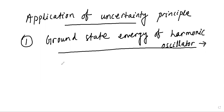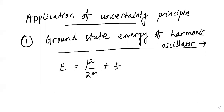We know the total energy of a harmonic oscillator in one dimension, along the x-axis, is given by p²/2m — where p is the momentum and m is the mass — giving the kinetic energy, plus (1/2)kx², or equivalently (1/2)mω²x² in terms of mass and angular frequency ω.